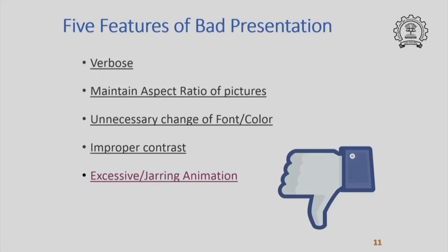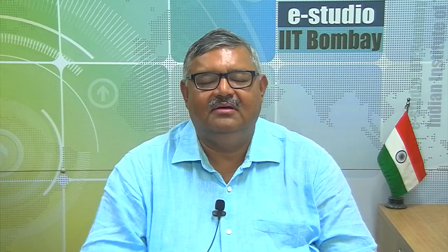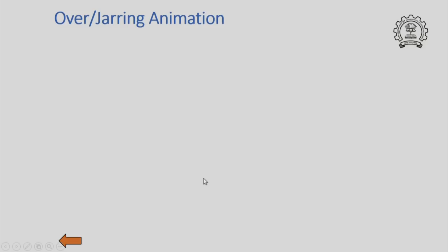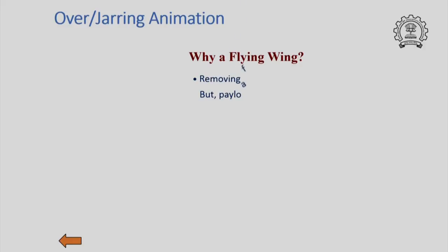Animation is very useful — it helps in structuring the presentation and focusing the attention of the audience at the desirable places. But sometimes animation can become excessive and then it becomes very destructive or jarring. Here is an example of animation which actually defeats the whole purpose. The worst example of animation that can be frustrating is where the words are falling and the audience is actually getting frustrated, waiting for the sentence to be over.